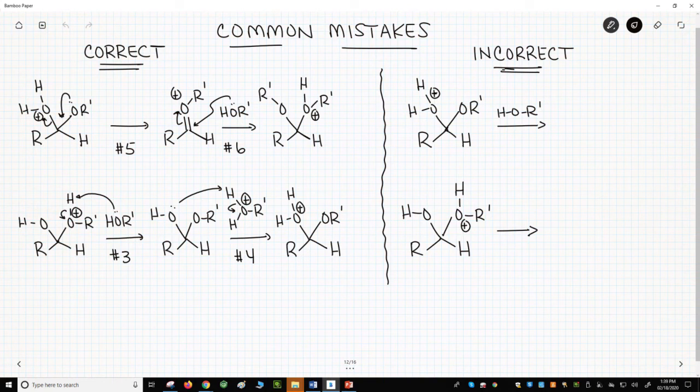The first mistake involves steps five and six. The water is ejected and then the alcohol attacks. This looks like a substitution and it is. The mistake is to use an SN2 reaction to do the reaction in one step.